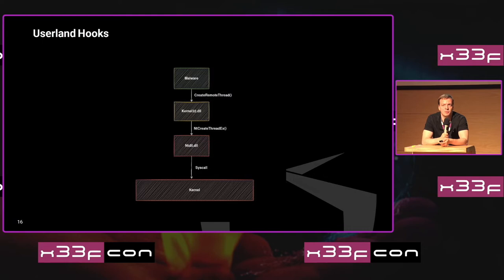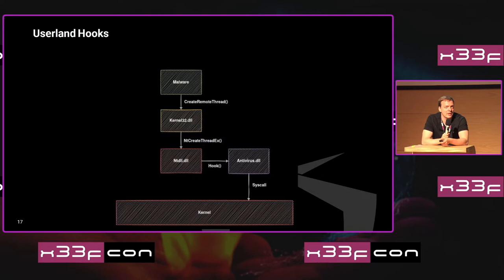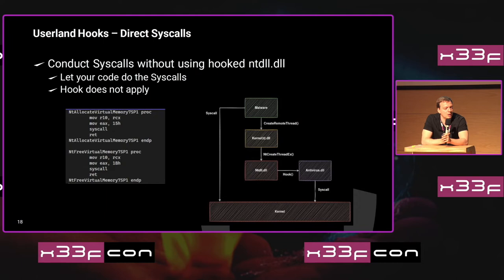Basically, if you're trying to create a remote thread, the malware goes through the abstraction layer in kernel32.dll, which calls something in ntdll, and ntdll then performs the system call. If there's a userland hook in place, the first steps are similar — you still go through kernel32.dll, then ntdll — but last you end up in the antivirus DLL which does some analysis. The most obvious way to bypass this is to directly conduct a system call by embedding the code snippets of ntdll into your own malware, which effectively bypasses kernel32, ntdll, and the antivirus DLL.